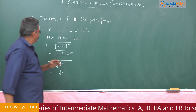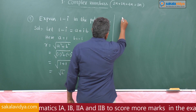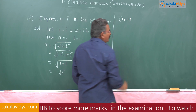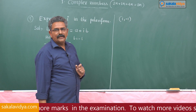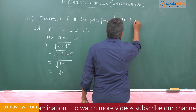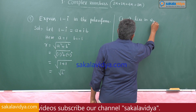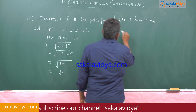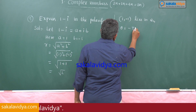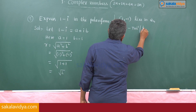Now, 1 minus i corresponds to the point (1, minus 1). Where does (1, minus 1) lie? It lies in the fourth quadrant. Therefore, the amplitude theta is equal to minus tan inverse of mod(b/a).